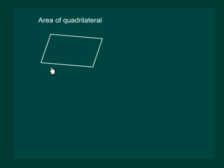Let us consider a quadrilateral. We know that a quadrilateral is any four-sided enclosed figure. Let us name it a, b, c and d. We can see that this general quadrilateral can be split into two triangles by drawing one of its diagonals. Say we draw diagonal ac. Now we have two triangles: abc and adc.